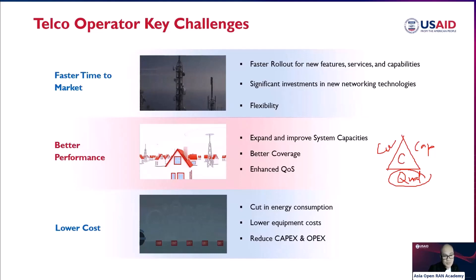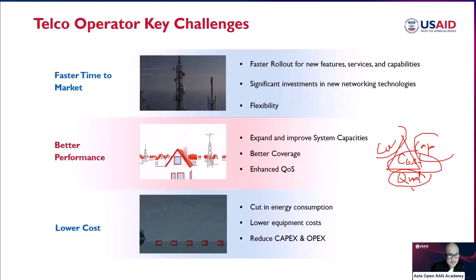There is actually a fourth dimension in network design: cost. Whenever you are designing a network, you don't just consider coverage, capacity, and quality — you also need to consider cost. So lower cost, including cuts in energy consumption and equipment cost, must be achieved, and the CAPEX and OPEX must be reduced.